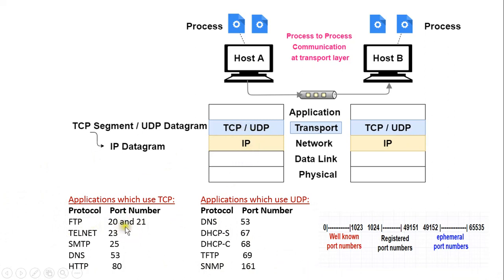FTP uses two separate port numbers: 20 and 21. Port number 21 is used for the control connection and port number 20 is used for the data connection. Telnet uses well-known port number 23. SMTP uses well-known port number 25. DNS uses port number 53. HTTP uses port number 80. All these applications make use of TCP at the transport layer.